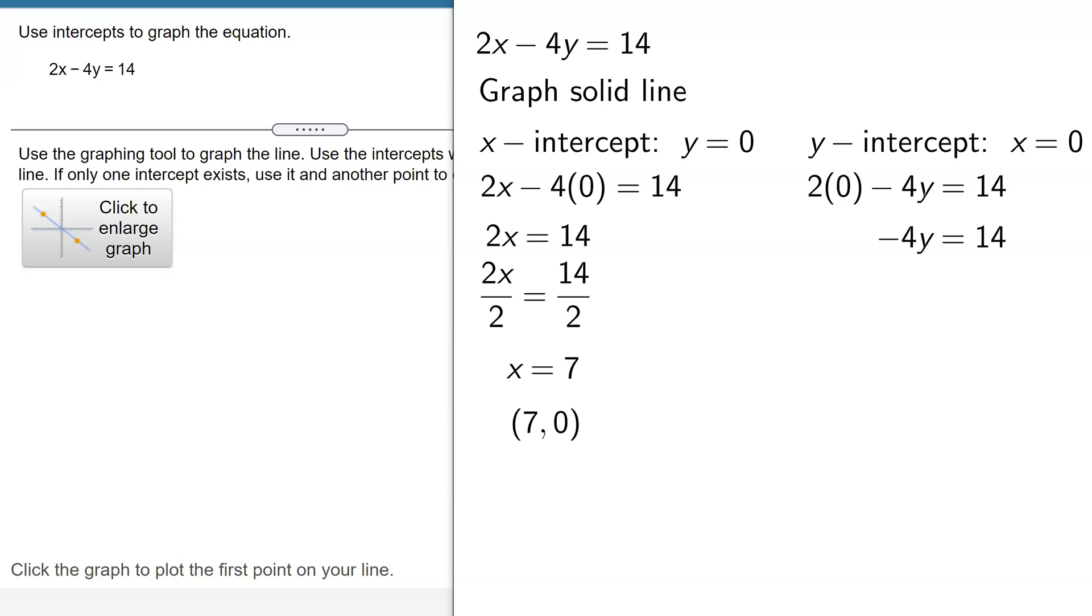To isolate the y, divide both sides by negative 4. So I get y equals 14 divided by negative 4. Numerator and denominator are divisible by 2. 2 goes into 14 seven times. 2 goes into 4 twice. So I'm going to get y equals negative 7 halves.